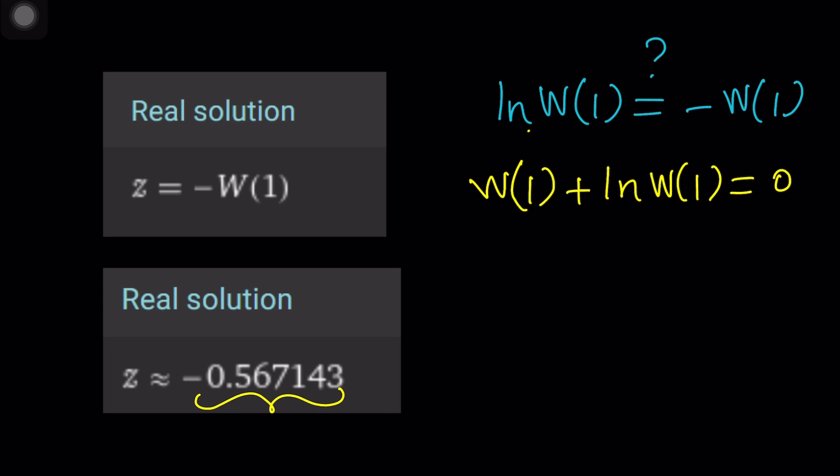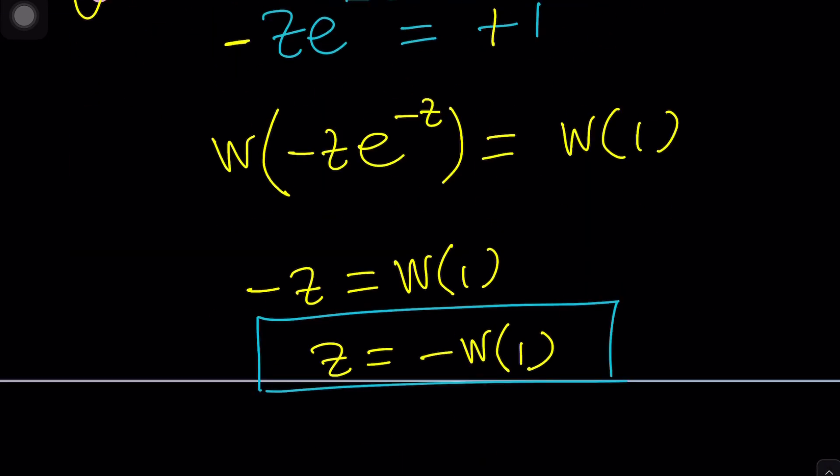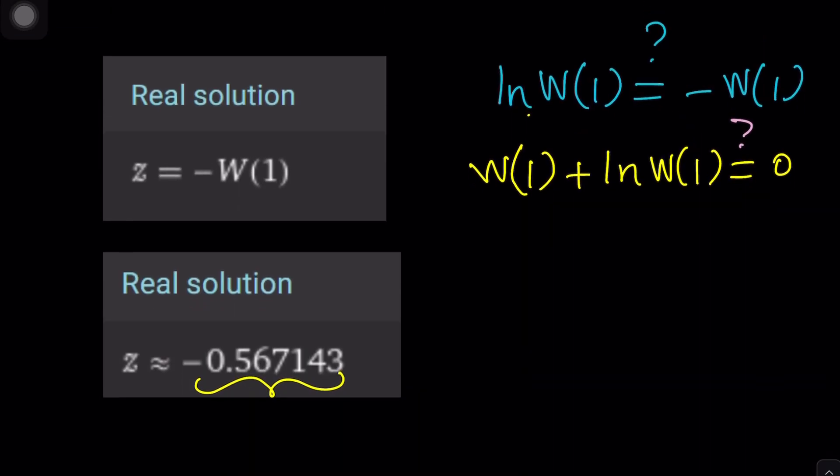Anyways, let's forget about what I said. But try to prove this identity. Is this an identity? Or did I make a mistake by following the first method? Because I think what we found with the, which one was agreed with the, yes, the second one. So the first method was something different, which was LN of W1. It didn't agree with Wolfram Alpha. Anyways, this is for you to find out.